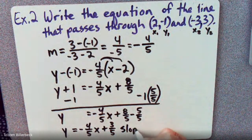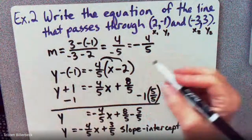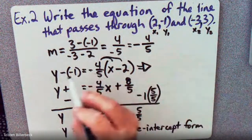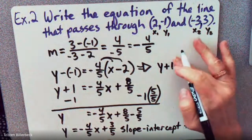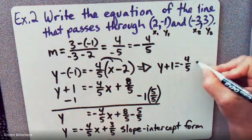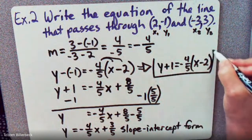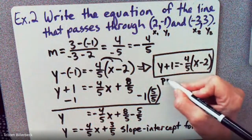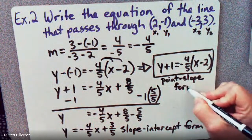So our final slope-intercept form is negative 4 fifths X plus 3 fifths. This is slope-intercept form. So we got the slope-intercept form from the point-slope form. Now, if we take the earlier form and write Y plus 1 equals negative 4 fifths times X minus 2, this is the point-slope form of this equation. Both equations are for the same line.